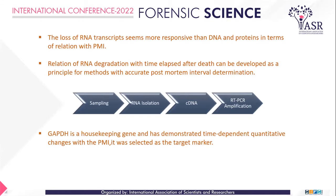The methodology is divided into four different stages. In the first stage, we did the sampling from a dead organism — we used a fish. After that, RNA was isolated from the sample and then converted to cDNA for further studies of RT-PCR amplification. We used GAPDH as a housekeeping gene in this project because it is considered one of the most accurate target markers for RNA studies.